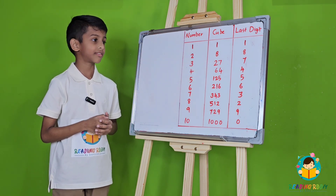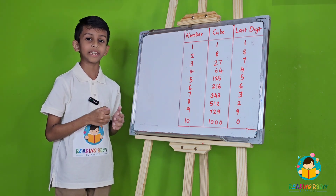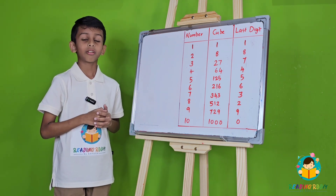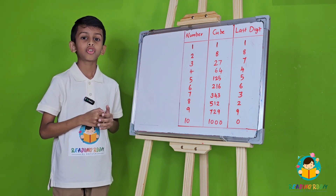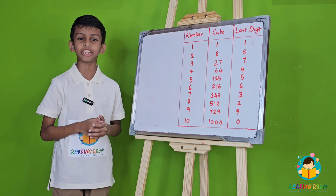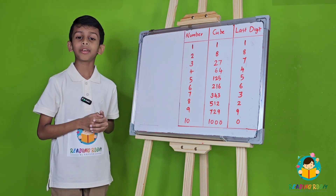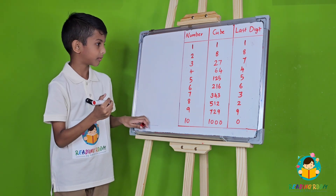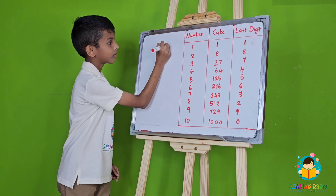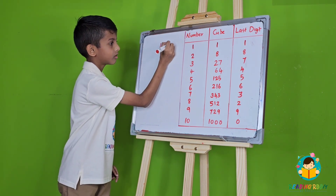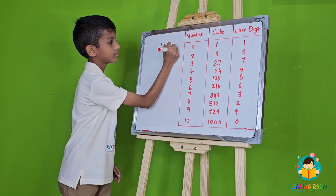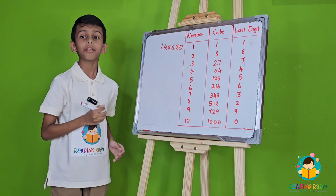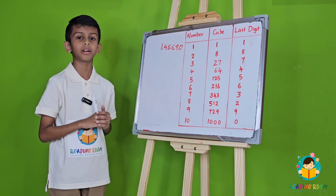Now, if you see here, the last digit of each cube ends with a different number. So it's also important to memorize the last digit of each number. An easy way to remember this is that for the numbers 1, 4, 5, 6, 9, and 0, the last digit of the cube is the number itself.